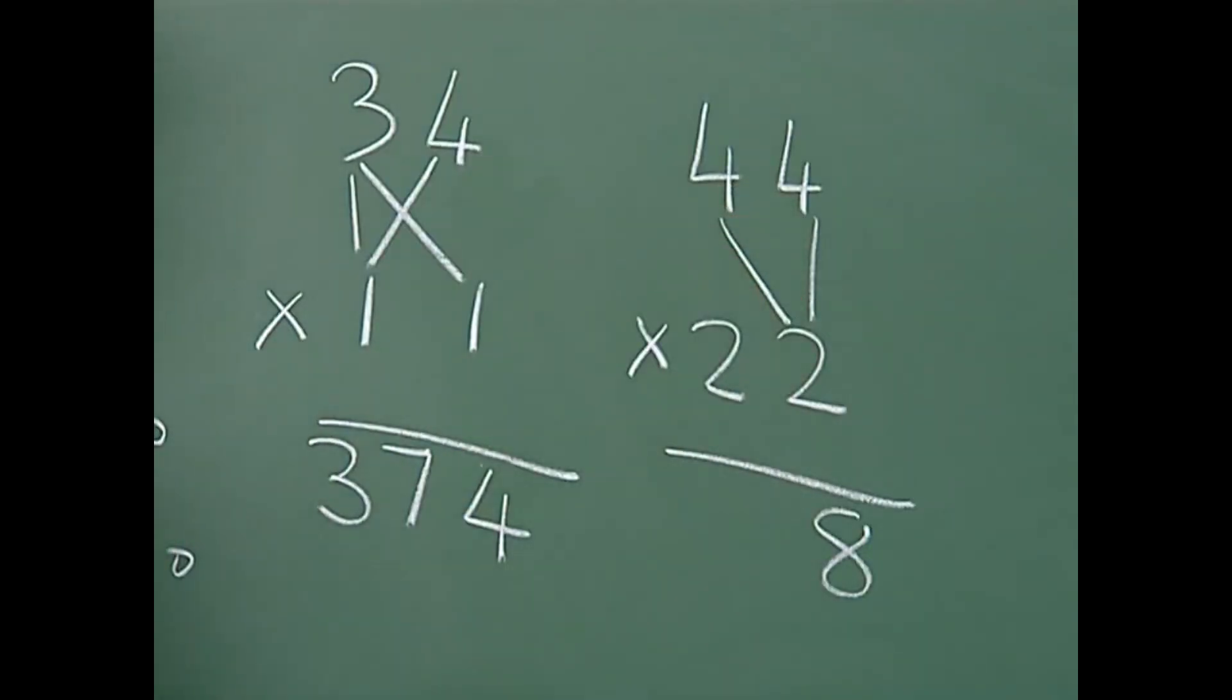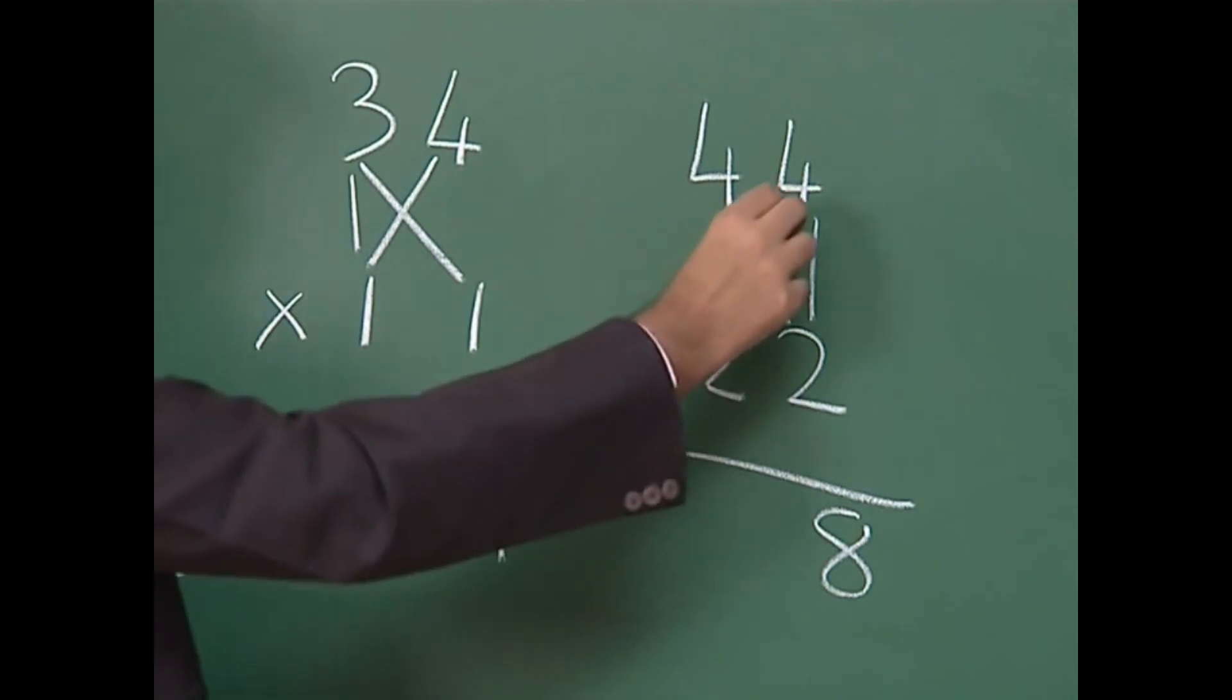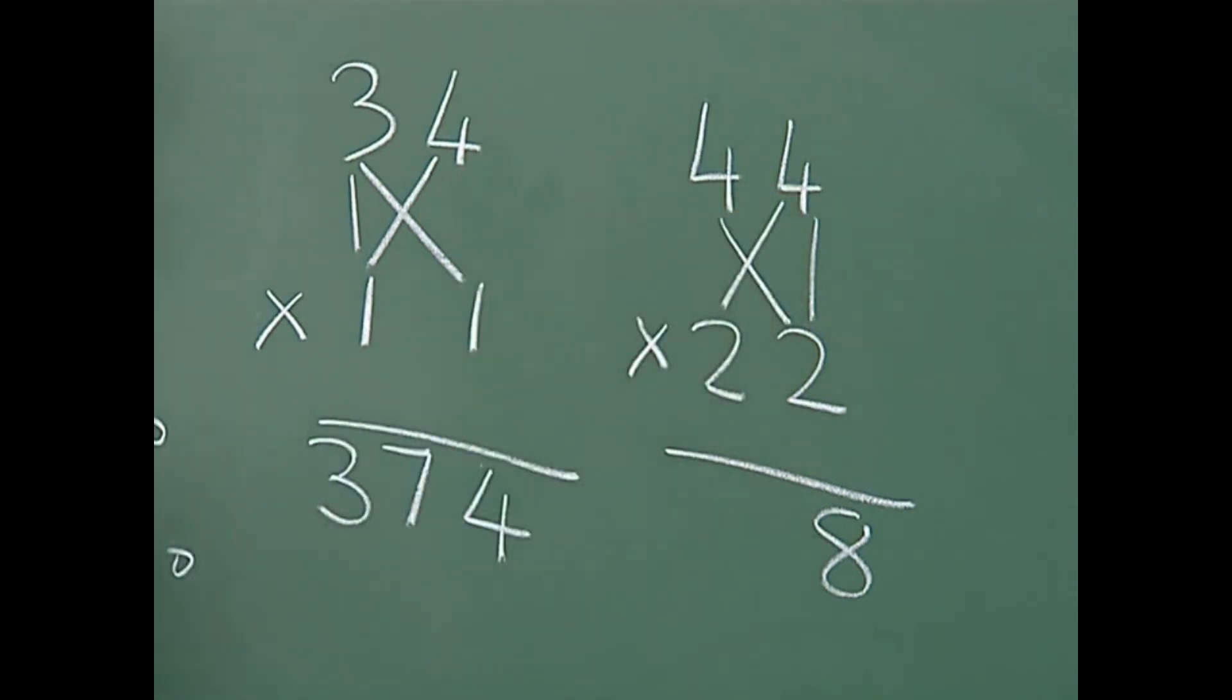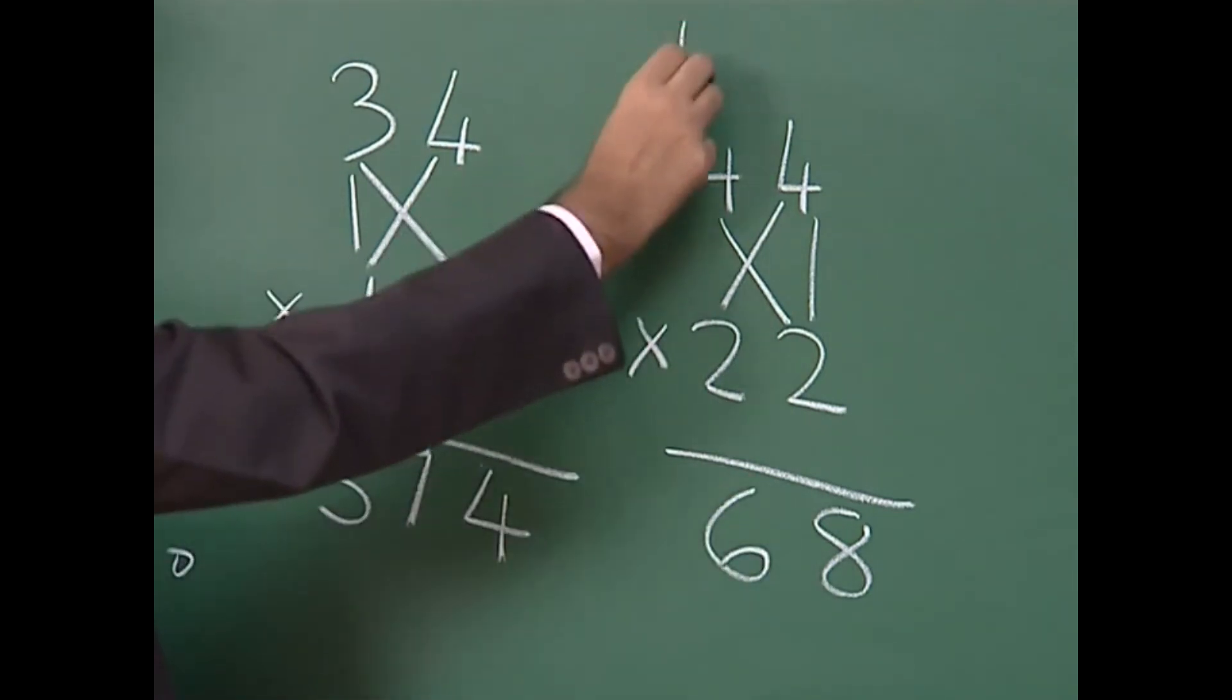4 times 2 is 8. Keep 8 in your mind. Again 4 times 2 is 8. 8 plus 8 gives me 16. I write 6 and carry over 1.